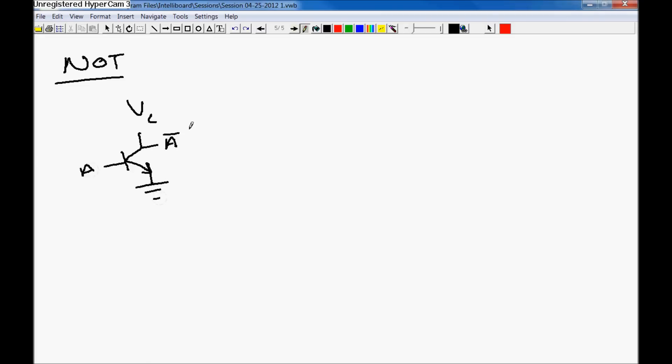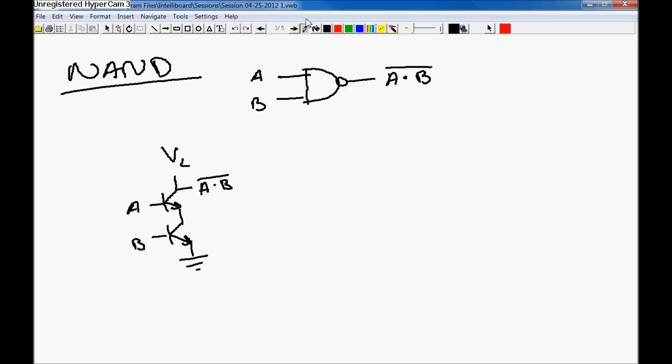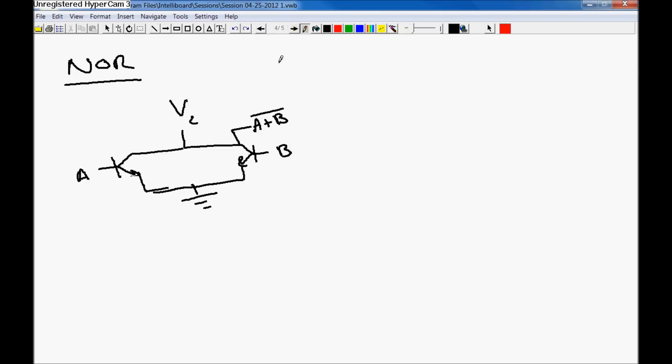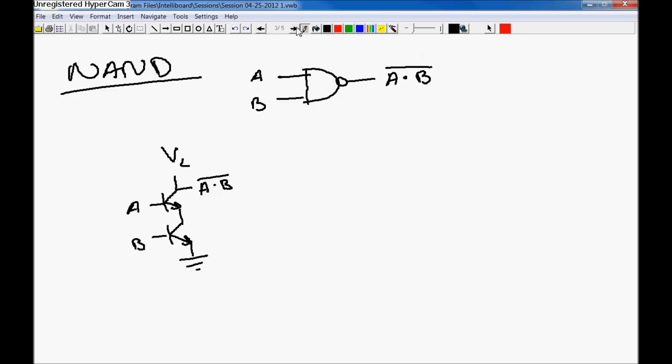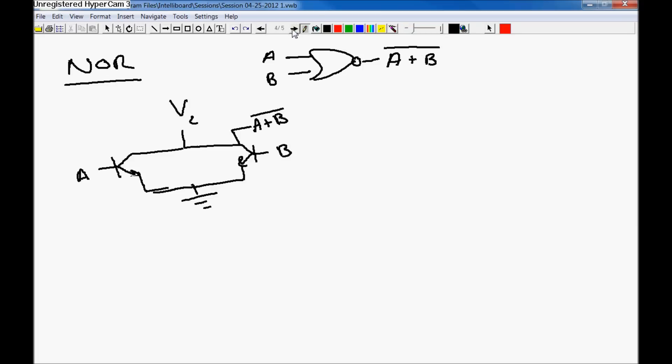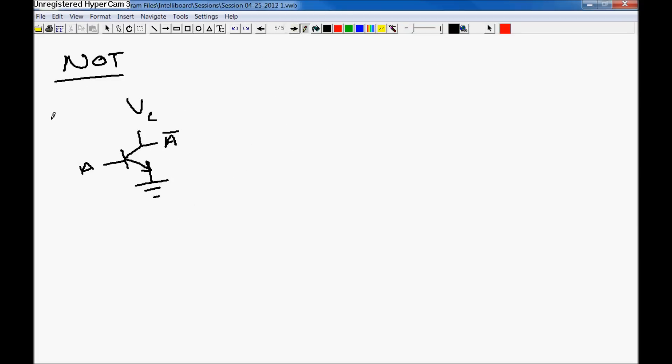So to construct these gates, you're going to pick either NAND or NOR. Oh, I forgot to give you guys the NOR gate. [Draws NOR gate symbol] So you're going to either pick NAND or NOR, and you're going to combine that in some way with NOT to make it work.